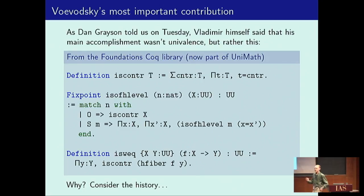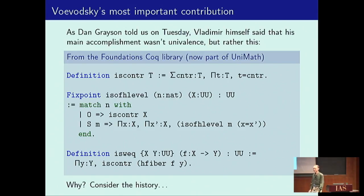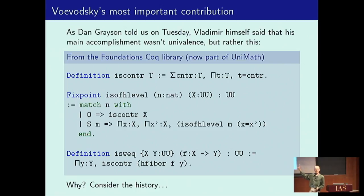Why would he consider this, and why would we consider this such a great accomplishment? We'll get back to it. I'm not expecting you to understand this at the moment. Whatever it is, it's a few lines of code, really. Why could this be more important than univalence, which everybody talks about and is really useful for all sorts of things?